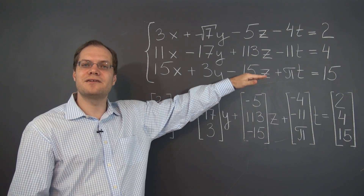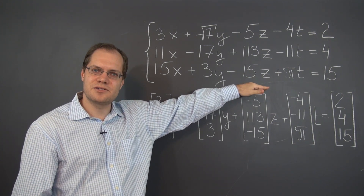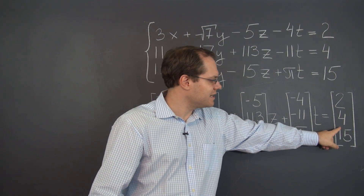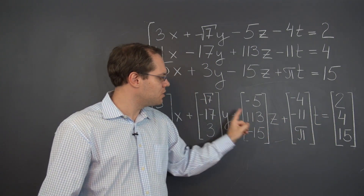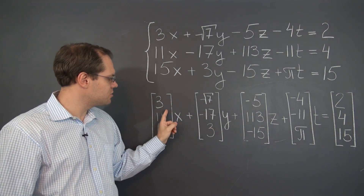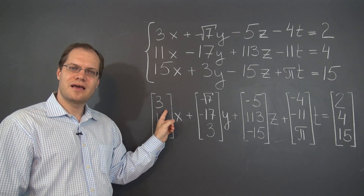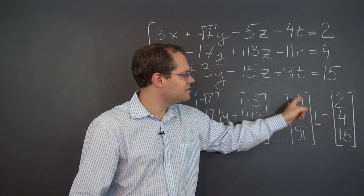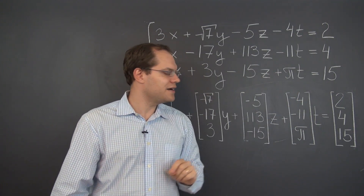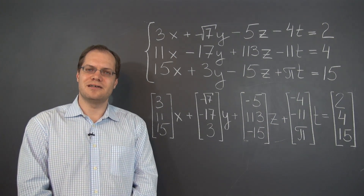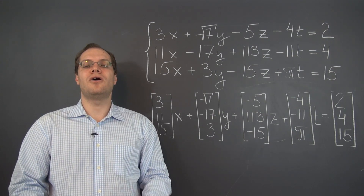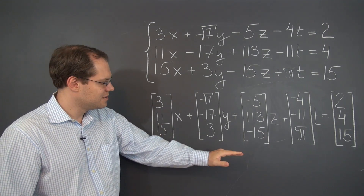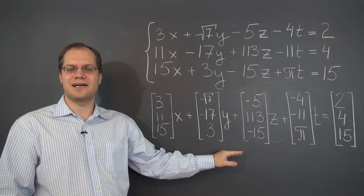We've already discovered that linear systems are just a problem in decomposition, where the vector on the right-hand side is to be decomposed in terms of these four vectors, and the unknown coefficients correspond to x, y, z, and t — the variables in the original linear system. So we'll almost always think of linear systems in terms of decomposition.